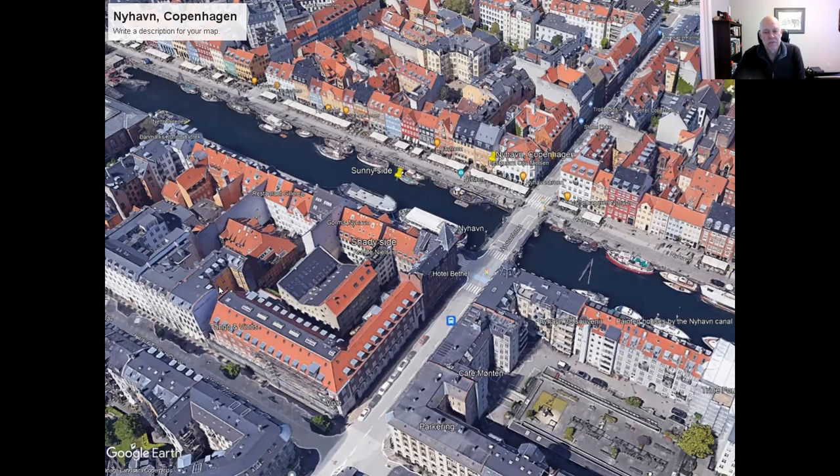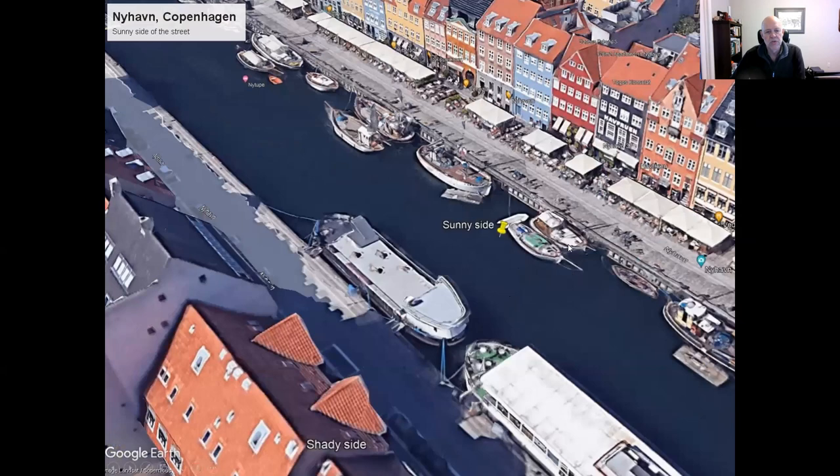We're going to start in Copenhagen, Denmark, one of the wonderful cities in the world. This canal is called Nyhavn Street, or New Harbor Street. It's a fascinating place to look at. If you look closely, you see that on one side of the street it's active and busy with lots of people. The other side is sort of empty.